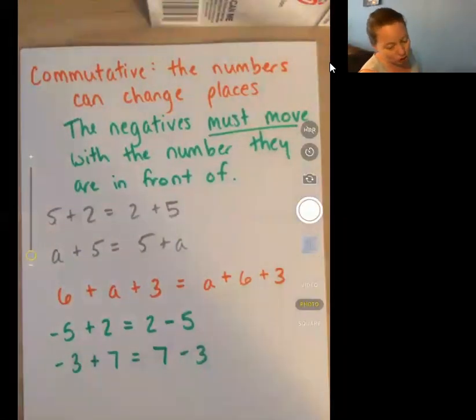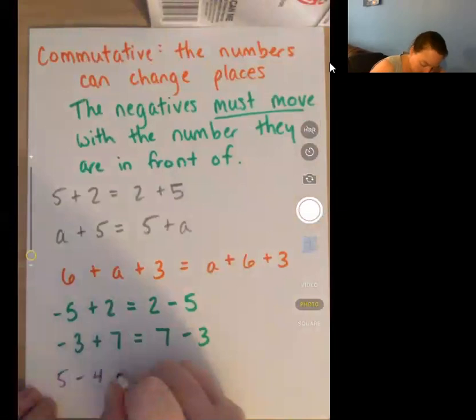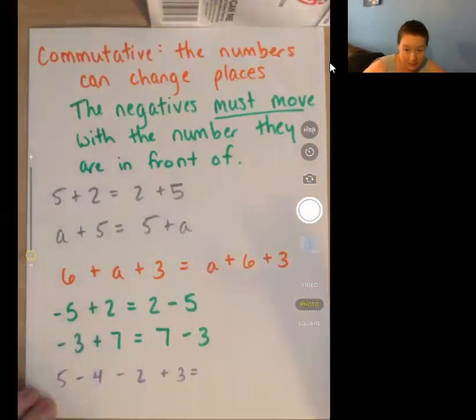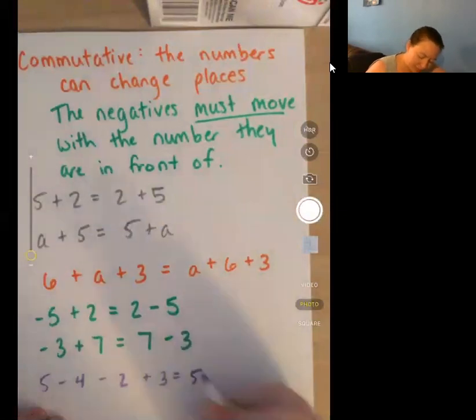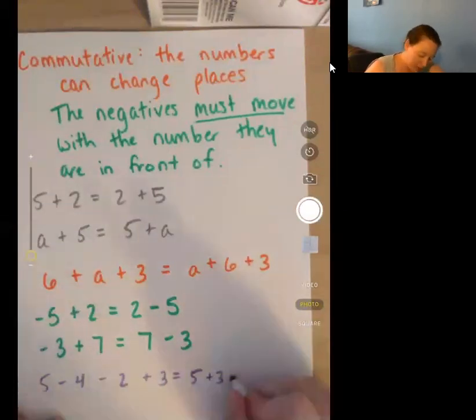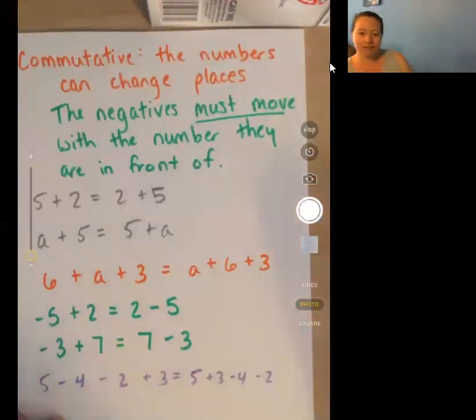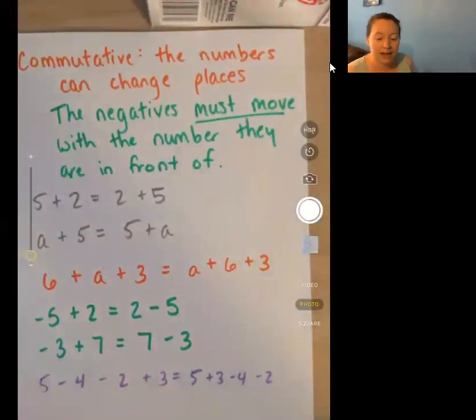And if you end up with an entire string of numbers, they will give you 5-4-2+3. So let's rewrite that. Let's put the positives first. I like having the positives first. So my five is a positive plus that three, which is also a positive. Then I'm going -4 because that's a negative -2 because that's a negative. So I end up with 5+3-4-2. Make sure you bring the positive or the negative sign with you and you will have no problems whatsoever.